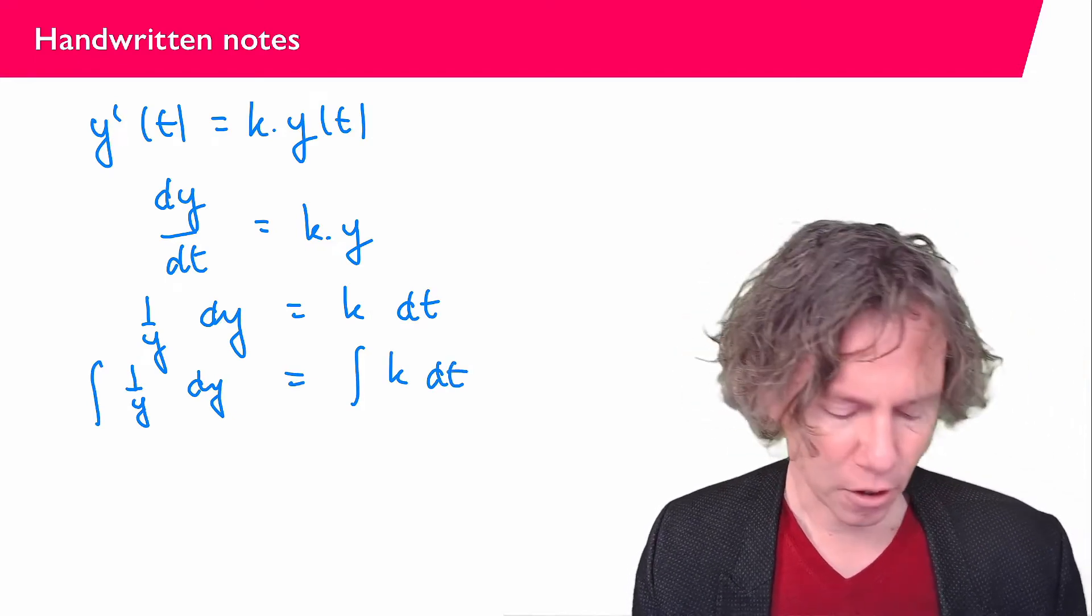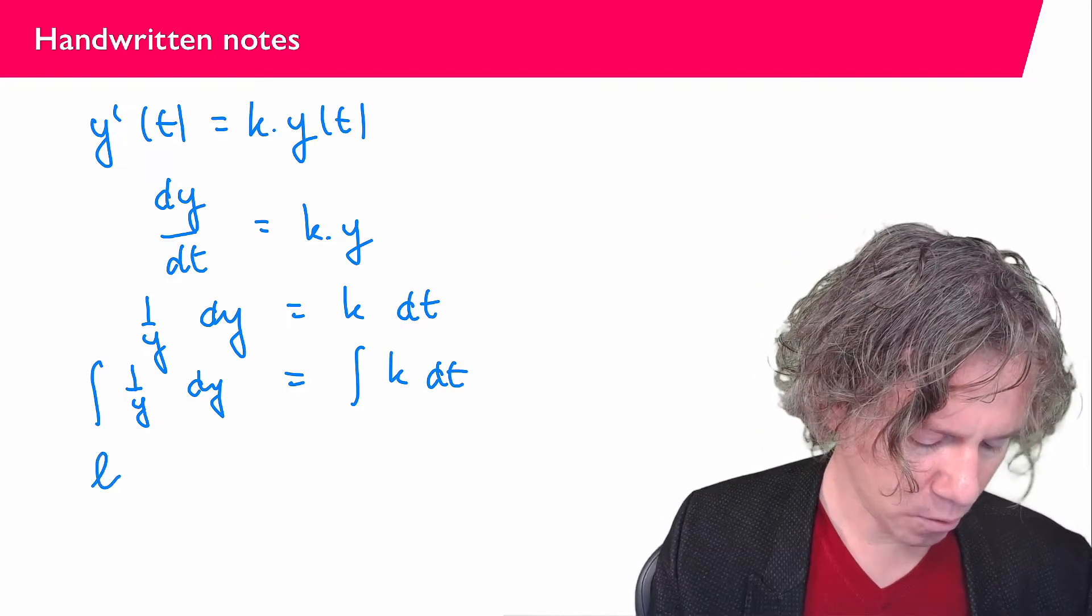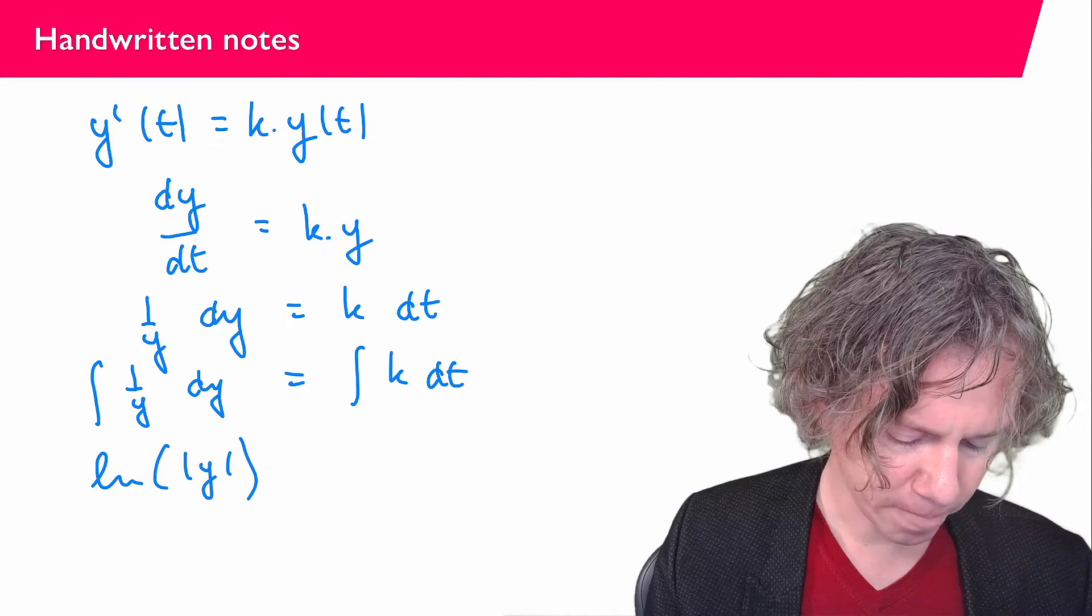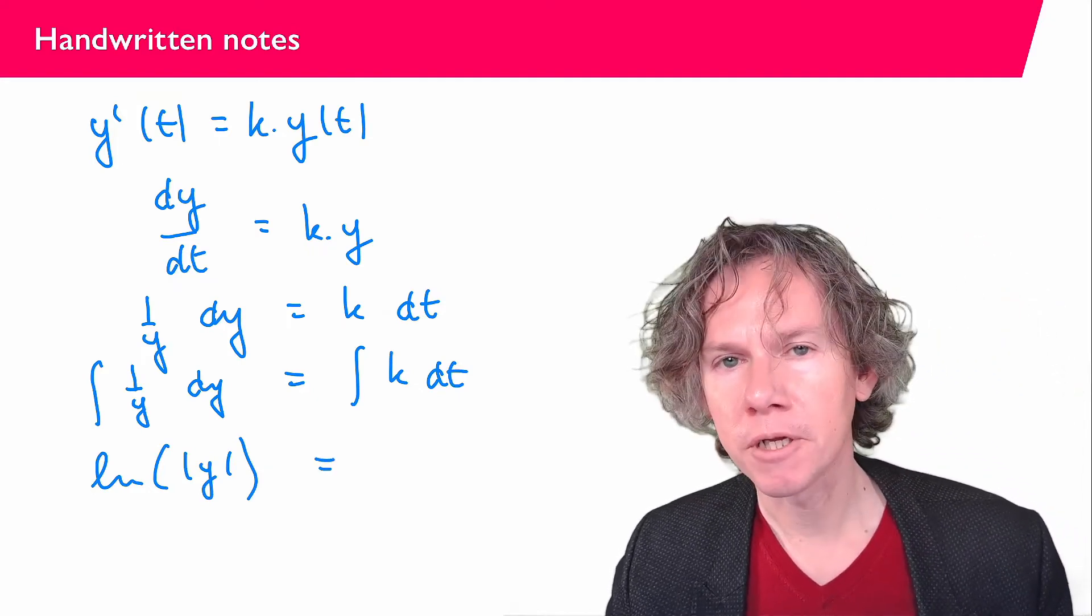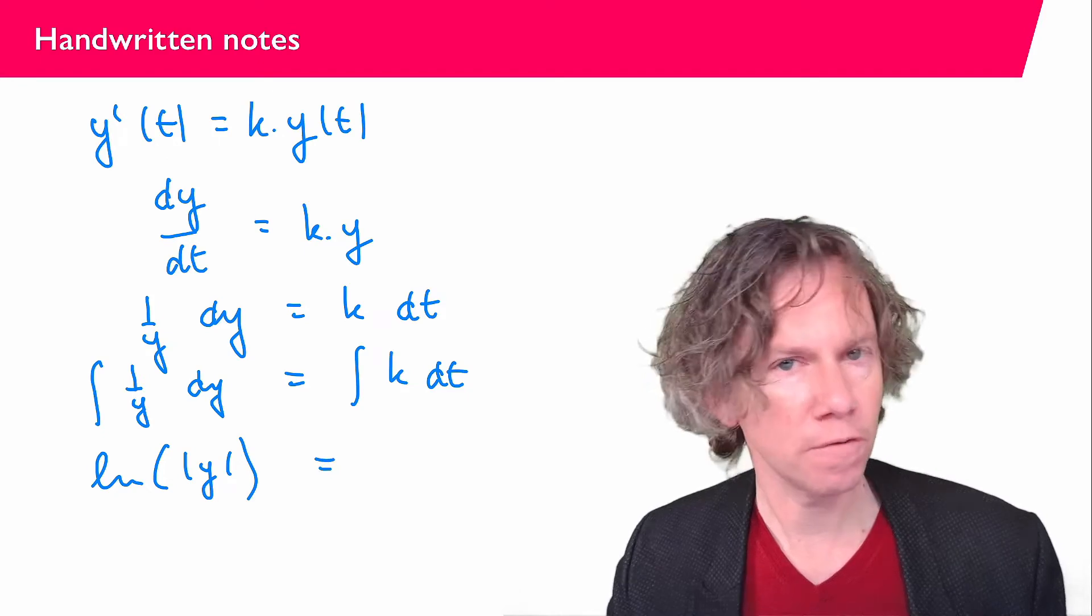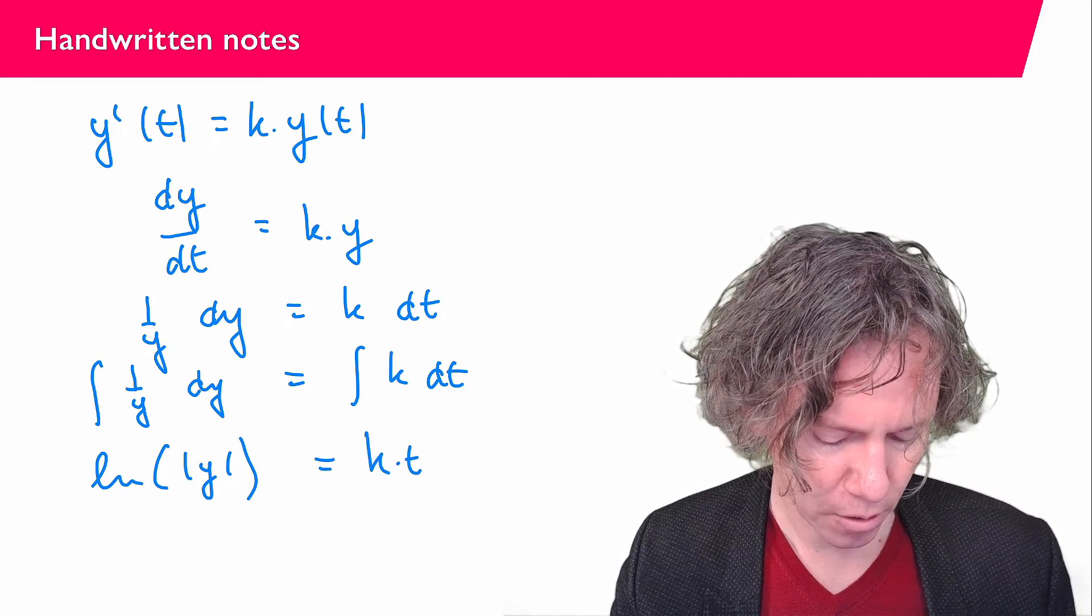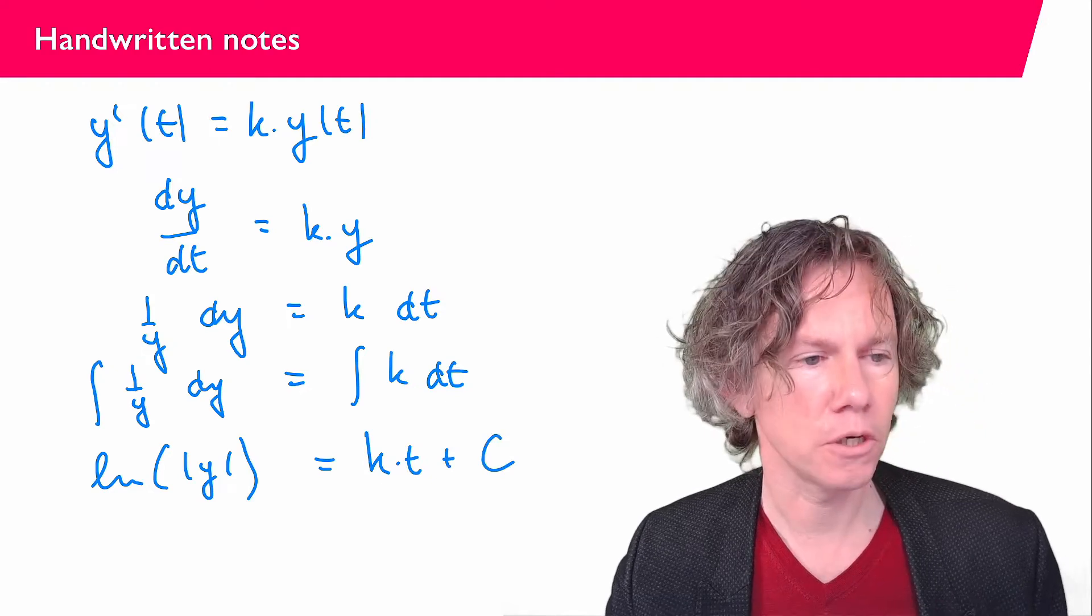Now on the left-hand side we can find an antiderivative: that's ln|y|. And on the right-hand side, remember that k is just a constant, so if I integrate with respect to t, then I find k·t plus an arbitrary integration constant.